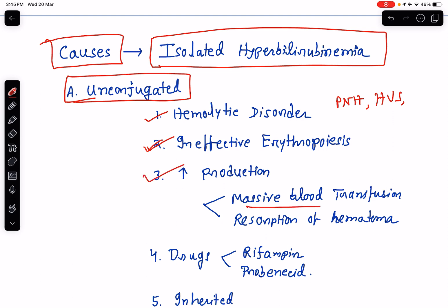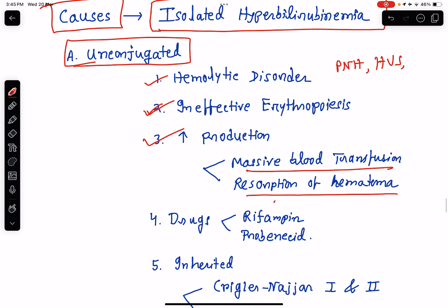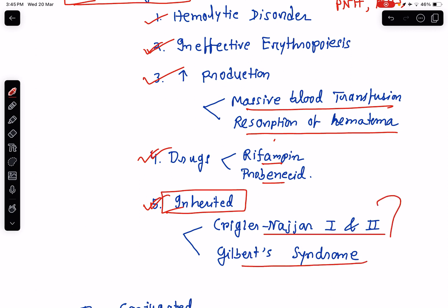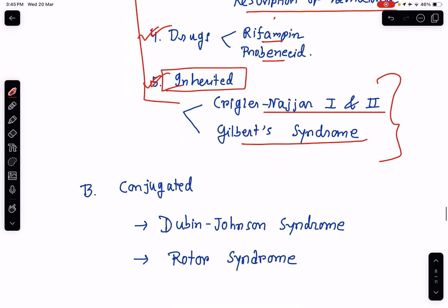Increased production due to massive blood transfusion and resorption of a massive hematoma may result in unconjugated hyperbilirubinemia. Certain drugs like rifampin and probenecid reduce hepatic uptake of bilirubin, thereby resulting in hyperbilirubinemia. And lastly, inherited conditions of unconjugated hyperbilirubinemia — that is Crigler-Najjar syndrome type 1 and 2 and Gilbert syndrome — will be discussed in my next class. These are the causes of isolated unconjugated hyperbilirubinemia.